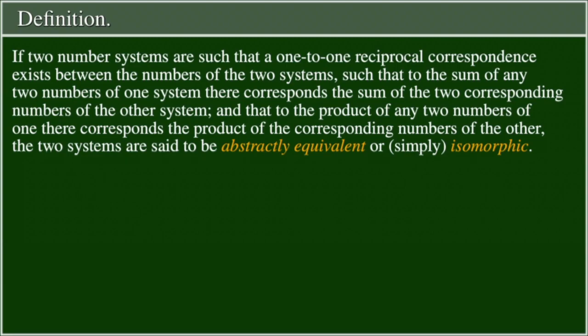Definition. If two number systems are such that a one-to-one reciprocal correspondence exists between the numbers of the two systems, such that to the sum of any two numbers of one system there corresponds the sum of the two corresponding numbers of the other system, and that to the product of any two numbers of one there corresponds the product of the corresponding numbers of the other, the two systems are said to be abstractly equivalent or simply isomorphic.